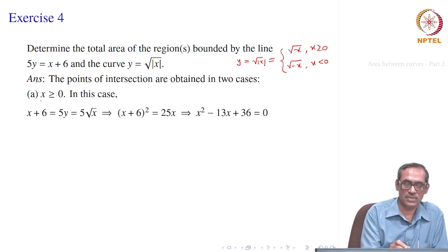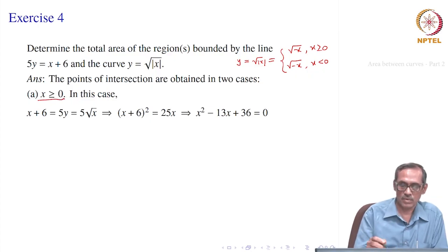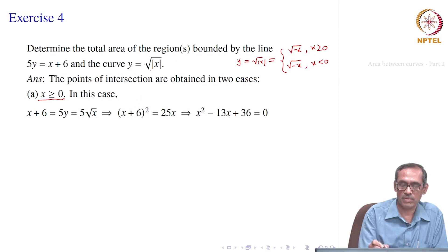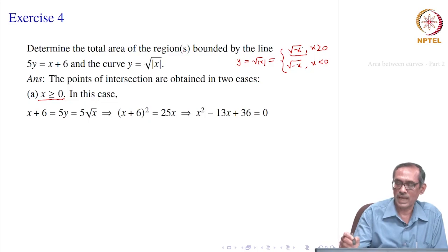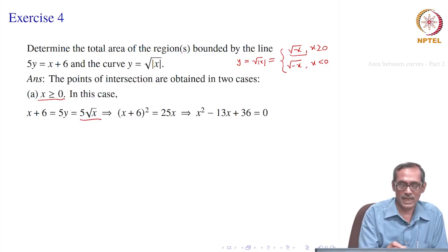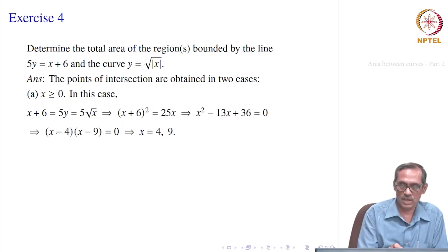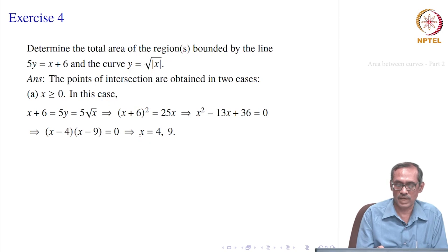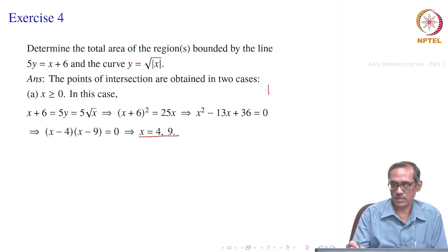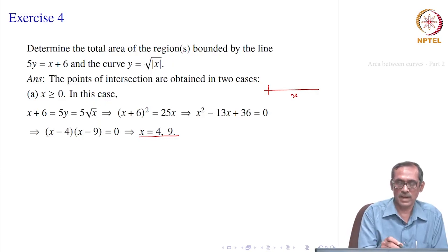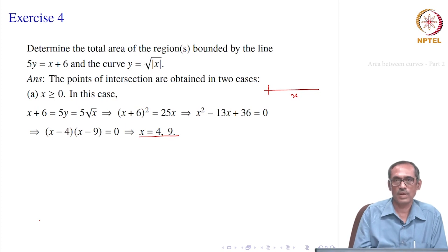For the first case, x ≥ 0: setting 5y = x + 6 and 5y = 5√x, then eliminating y and squaring gives (x + 6)² = 25x, which simplifies to x² - 13x + 36 = 0. Factoring gives (x - 4)(x - 9) = 0, so x = 4 or x = 9. These two curves intersect at x = 4 and x = 9 in the positive region.